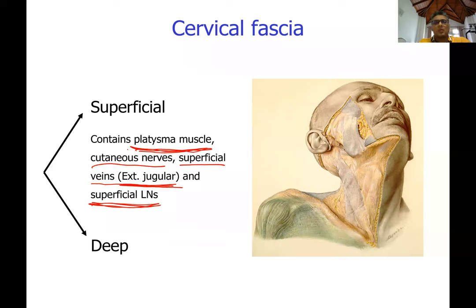A special thing about the neck is that you get a muscle in the superficial fascia or the subcutaneous tissue layer, which is called the platysma muscle. This muscle belongs to a group of muscles called paniculus carnosus muscles. These types of muscles are found abundantly in animals — if you look at a cow, it can move its skin by contracting muscles. We can't do it often, unless it is the facial muscles which are attached to the dermis of the skin. The platysma muscle belongs to the same group, and even though it's in the neck, it is supplied by the facial nerve.